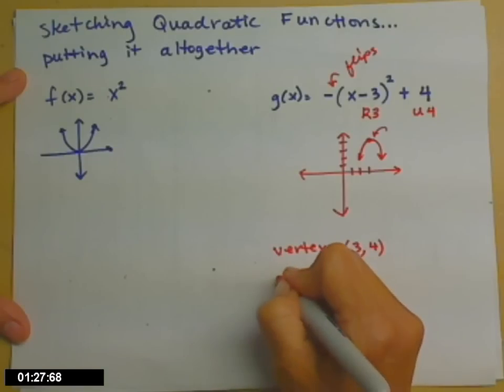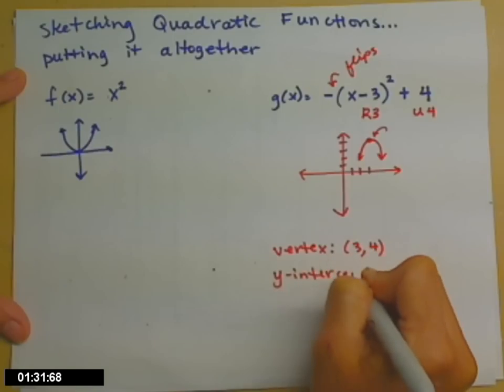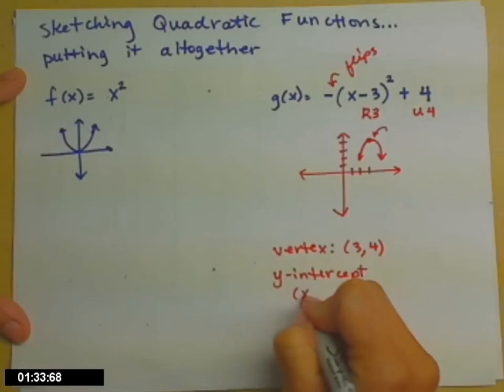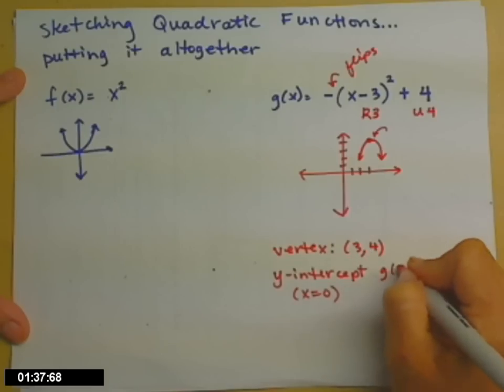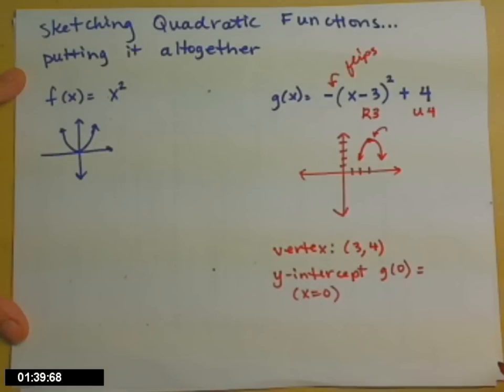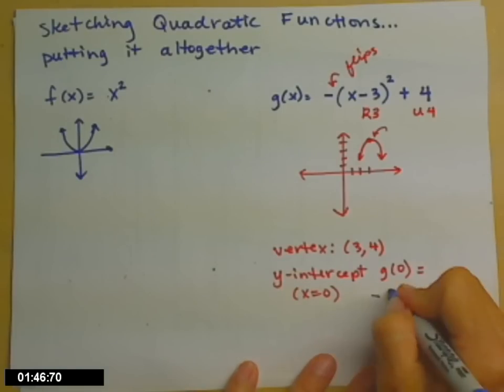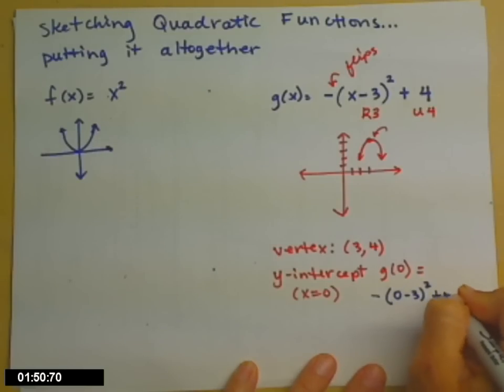You'll also be asked to find the y-intercept. Remember, y-intercepts are where x equals 0. So to find it for a function, you evaluate g at x equals 0. So let's go ahead and do that computation. We have the negative sign still out in front. Parenthesis, 0 minus 3 quantity squared plus 4.